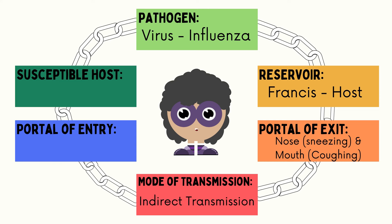For mode of transmission, it can be direct or indirect since we don't know if they had direct contact while playing. But using the fact that they were playing together — while Francis kept sneezing and coughing, the droplets may have landed on the toys they were playing with, and Vince held onto them, so the virus is now on his hands. The virus may then enter Vince's body through his nose, mouth, eyes, or a break in the skin. Since the virus entered Vince's body, he is now the new susceptible host.